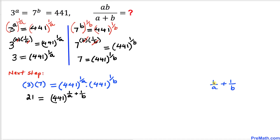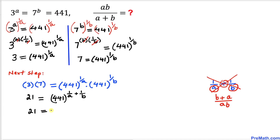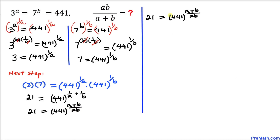Now let's simplify 1/a + 1/b. Using the cross-multiplication method: 1 times b is b, plus 1 times a is a, all divided by a times b. So 1/a + 1/b = (a + b) / (ab), and therefore 21 = 441^((a+b)/ab).